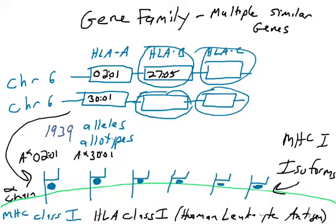These genes — HLA-A, B, and C — each have lots of different versions, lots of different alleles. For example, one allele of HLA-B has the name 2705, so it encodes a protein referred to as HLA-B*2705. That would be one of your HLA class 1, or MHC class 1, molecules.